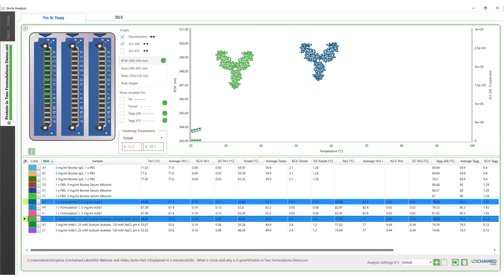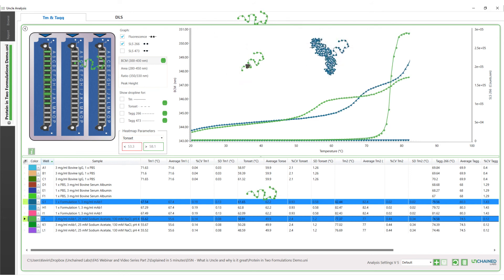Now let's compare the same monoclonal antibody in two different formulations on the UNCLE. As temperature heats up, the green antibody has its first melting temperature, followed by the blue antibody. Then we hit a second melting temperature for the green antibody, and aggregation also gets out of hand.